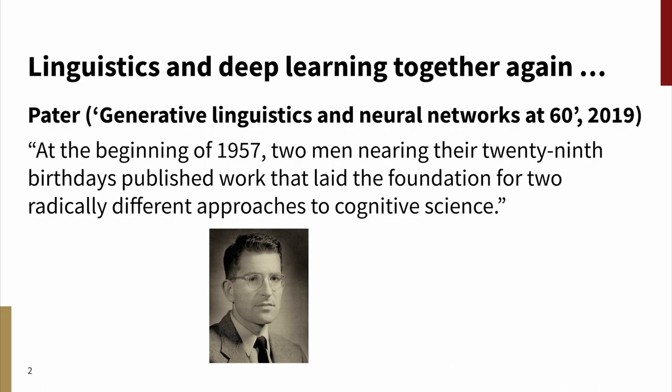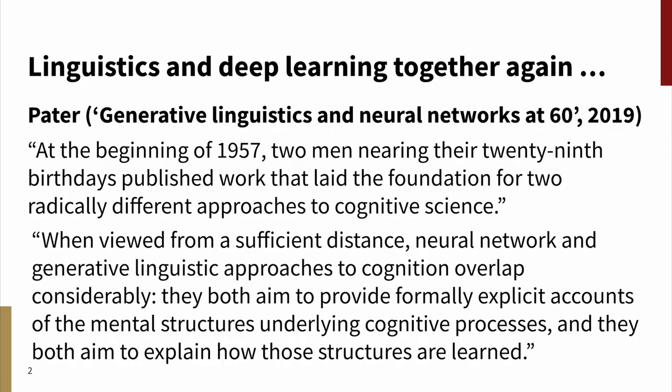At the beginning of 1957, two men nearing their 29th birthdays published work that laid the foundation for two radically different approaches to cognitive science. Now, linguistics might have allied itself with Rosenblatt, but of course, Chomsky's vision was seen as compelling, and so it wasn't to be. But Joe really eloquently articulates why linguistics and neural network research have wonderful potential for common ground and common cause.